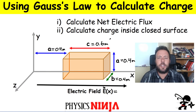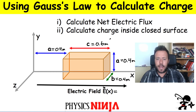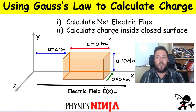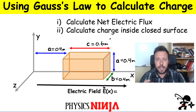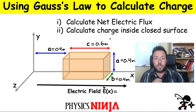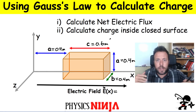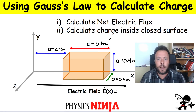Hi everybody, Physics Ninja here. Today we're going to apply Gauss's law to calculate a couple things. We want to calculate the net electric flux going through this rectangular shaped prism drawn here. The other thing I want to do is use Gauss's law in order to calculate how much charge is actually located inside that closed surface, that rectangular prism. If you're just getting started with Gauss's law, this might be the type of problem you'd look at.